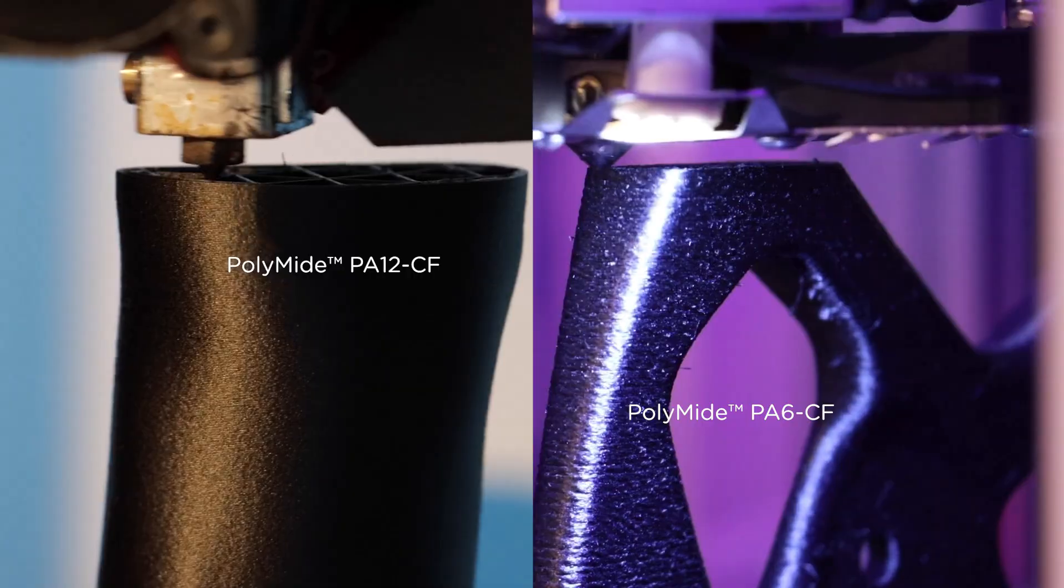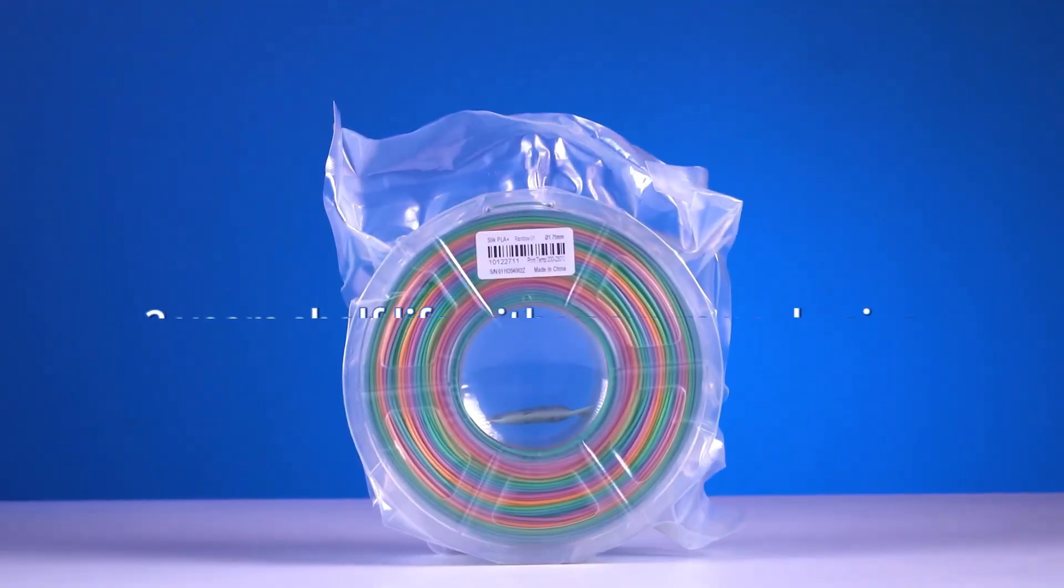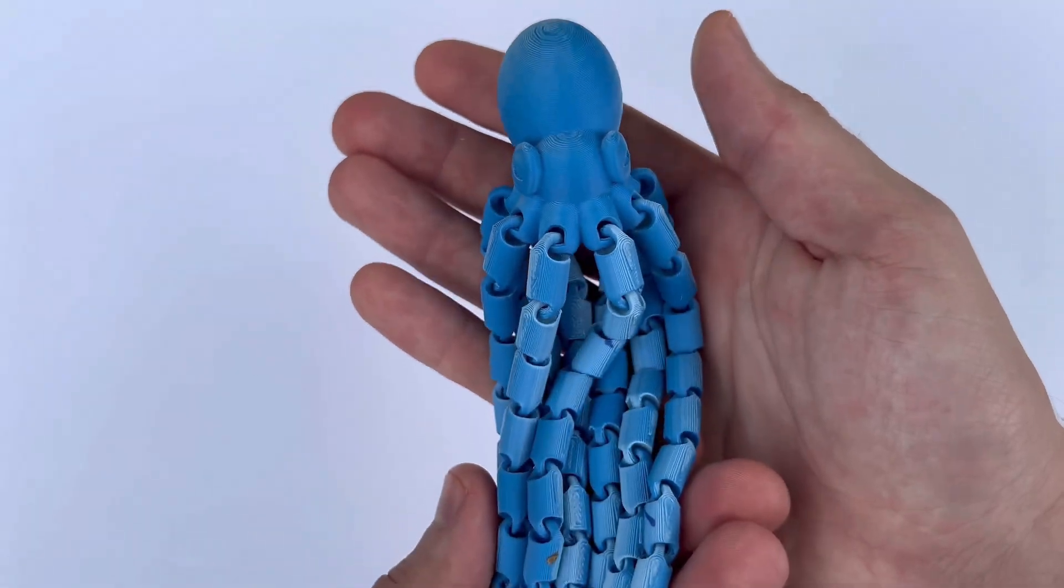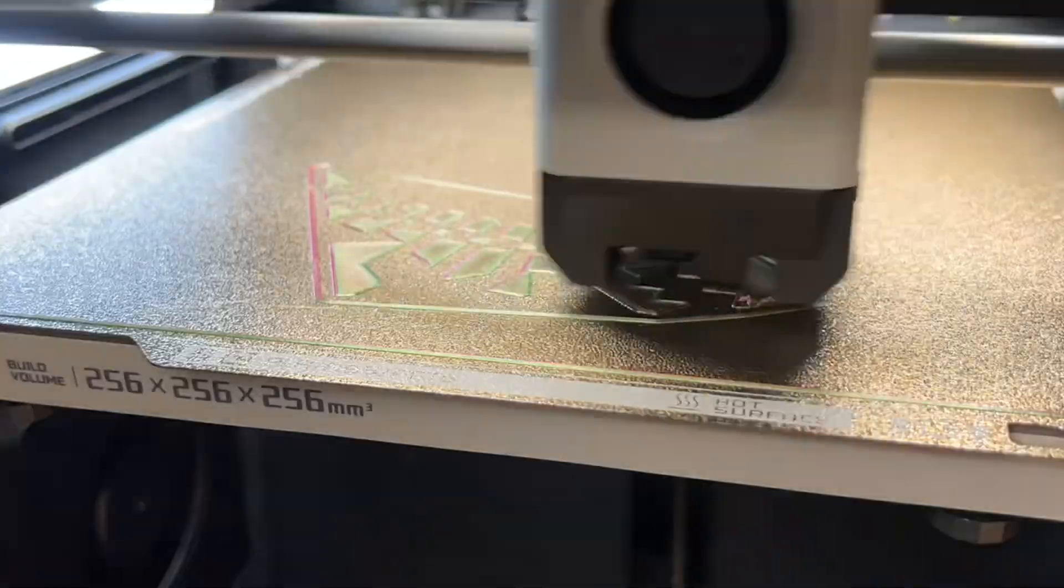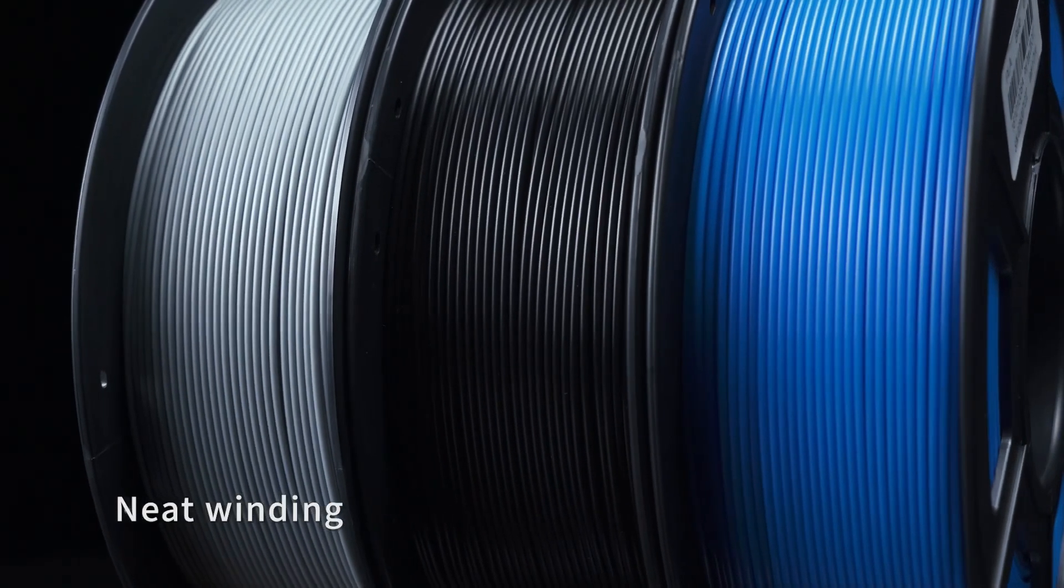So when it comes to color options with the filament, PLA has a lot more to offer. We have things like silk, tricolor wood, fluorescent, glow-in-the-dark filaments. So it's a lot cooler to look at, the prints. Whereas PETG also comes in various colors, the range of specialty options is a bit more limited compared to PLA.